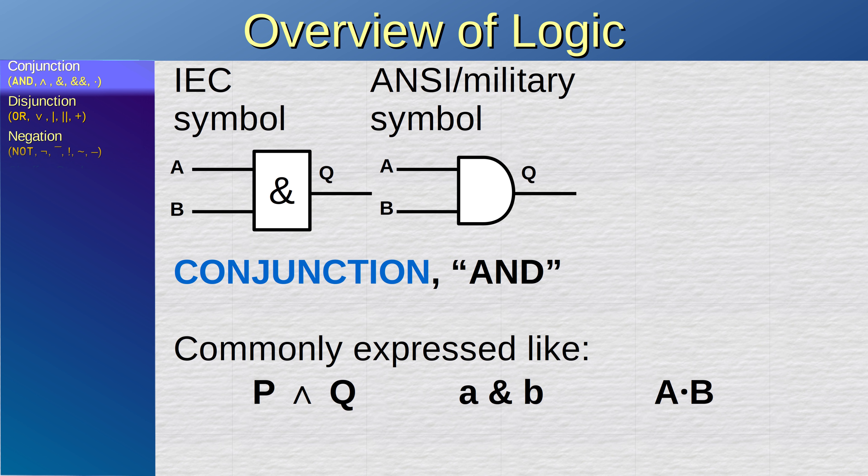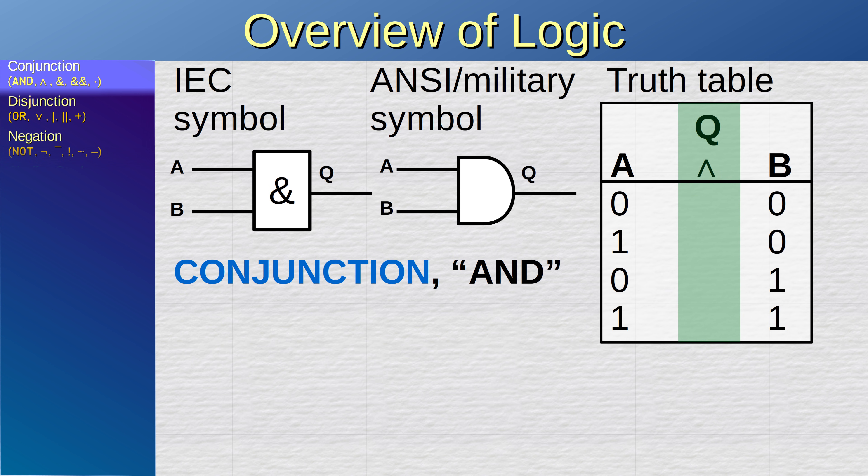In the circuit diagrams of digital electronics, the conjunction is represented by a box with an ampersand on it, or a shape that resembles the letter D, depending on which convention you follow, the International Electrotechnical Commission standard, or the one that originates from United States military. Whatever the case, it works like this.